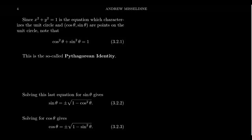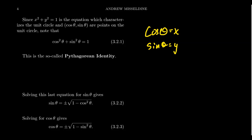As we saw earlier, since cosine of theta is the x-coordinate of any point on the unit circle, and since sine theta is the y-coordinate of that same point on the unit circle, given that the unit circle is defined by x squared plus y squared equals 1, we can interchange x with cosine and y with sine, and we end up getting cosine squared plus sine squared is equal to 1.